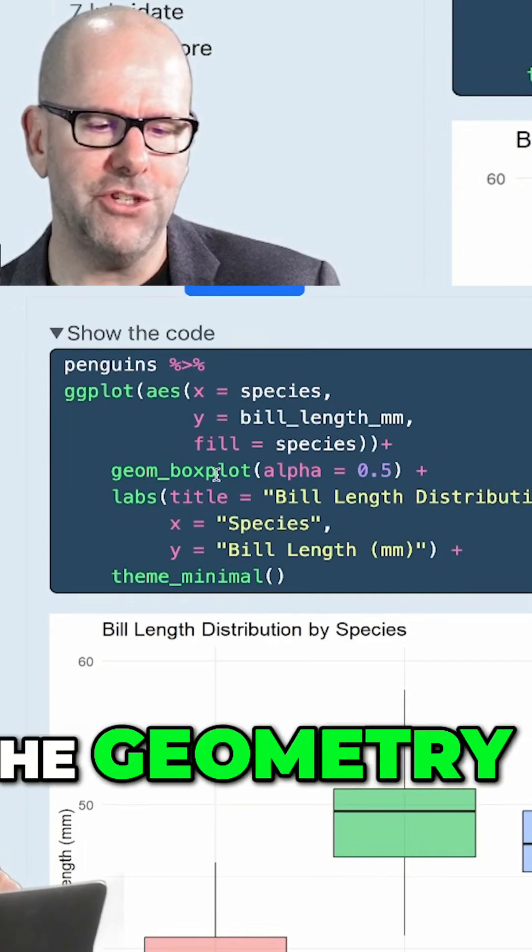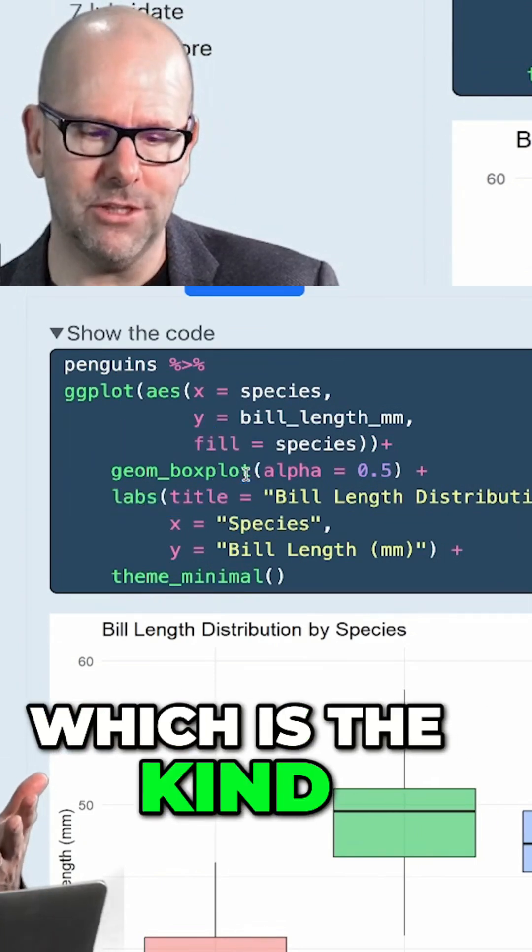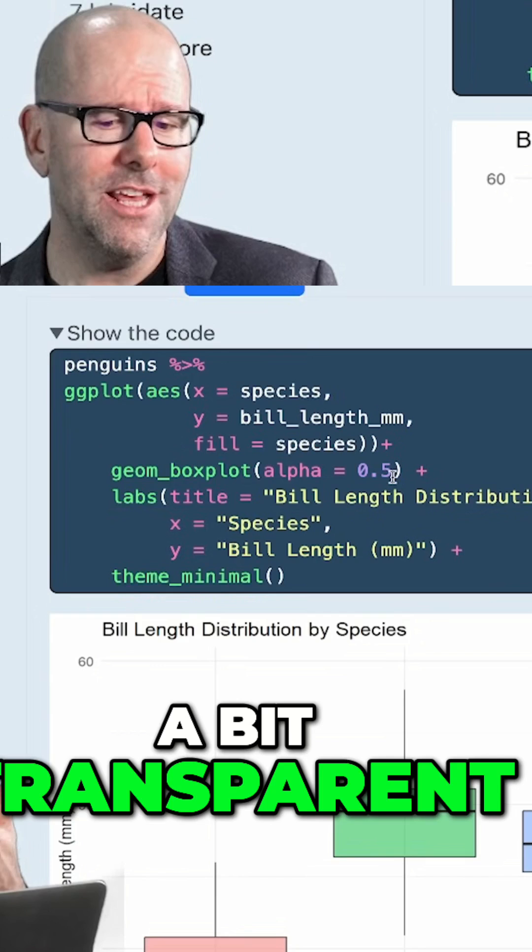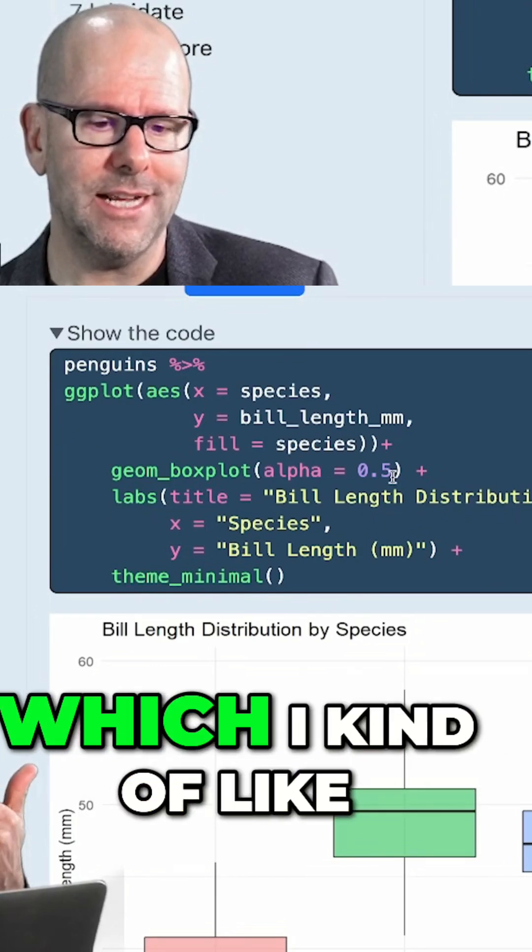And then I define the geometry geom_boxplot, which is the kind of plot that we've done here. Alpha equals 0.5 to make it a bit transparent, just gives it a slightly softer look, which I kind of like.